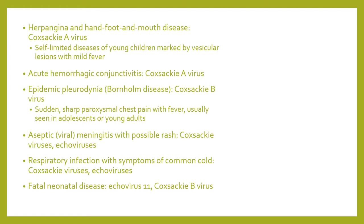Herpangina and hand-foot-and-mouth disease are caused by coxsackievirus A. These are usually self-limited among young children with marked vesicular lesions, mouth sores, and fever. Coxsackievirus A can also cause acute hemorrhagic conjunctivitis. Coxsackievirus B can cause Bornholm disease, an epidemic pleurodynia characterized by sudden sharp paroxysmal chest pain with fever, usually seen in adolescents and young adults. Coxsackieviruses and echoviruses can also cause aseptic meningitis with a possible rash, as well as respiratory infection. Coxsackievirus A1 and coxsackievirus B can both cause fatal neonatal disease.